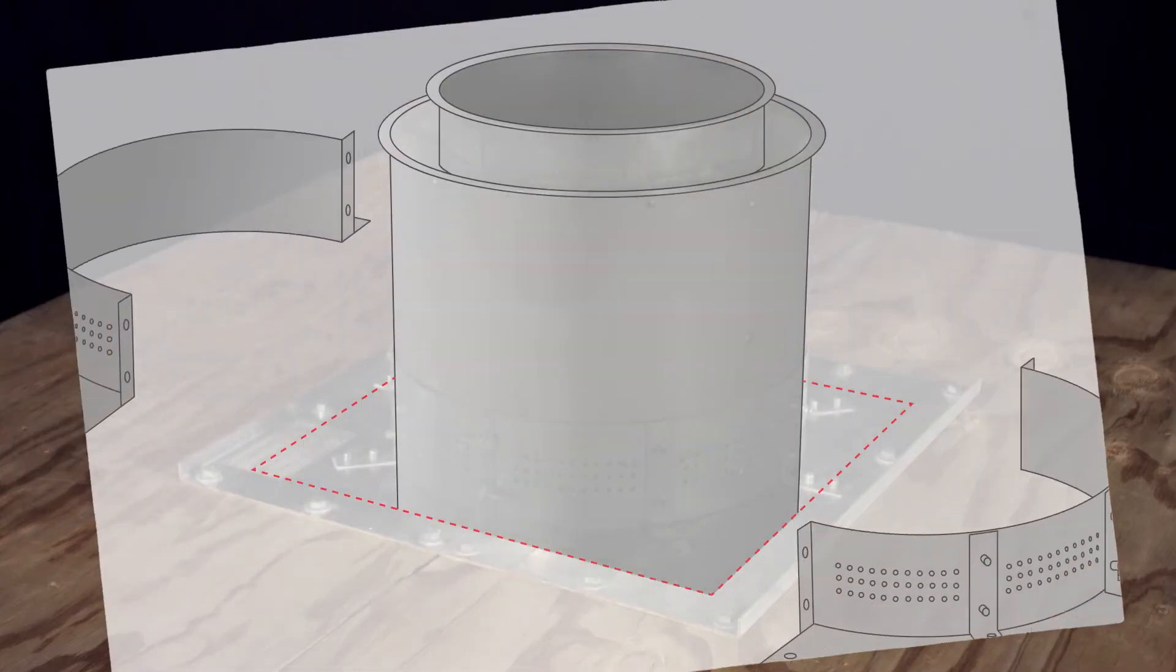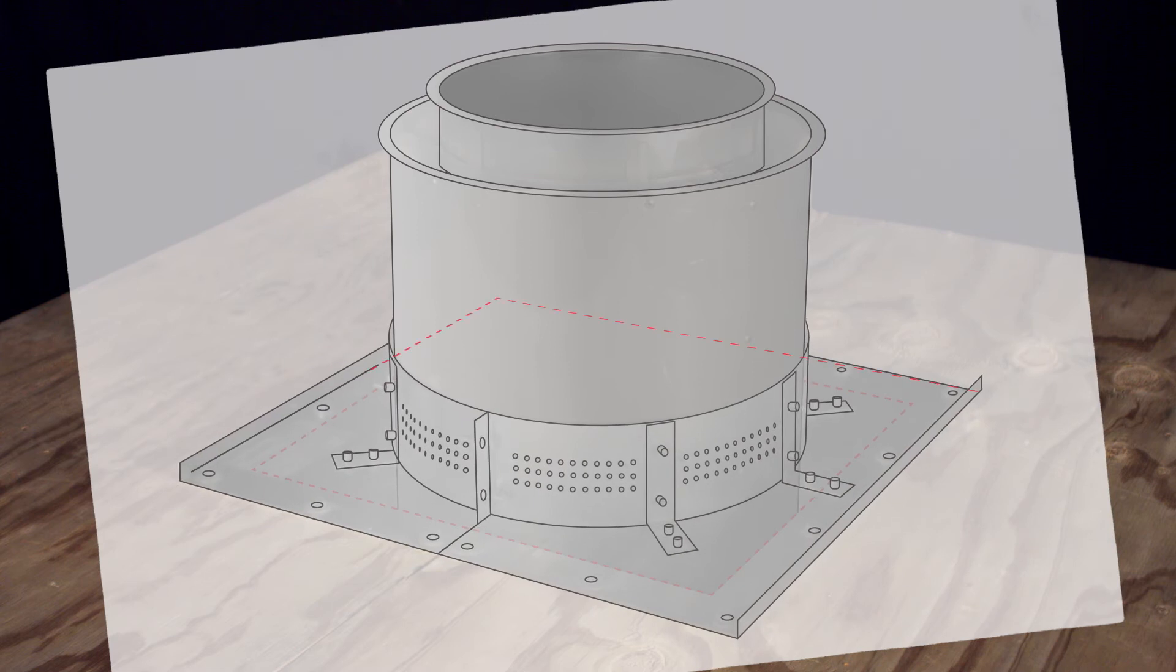Begin by positioning the floor plates around the duct so the edges of the plates align with the edges of the opening in the floor.